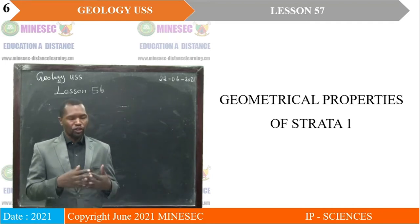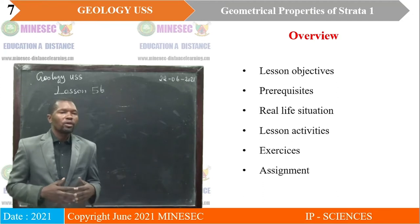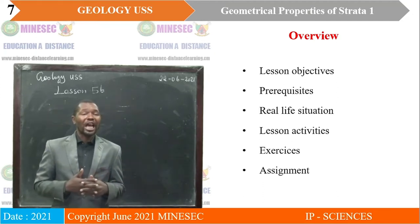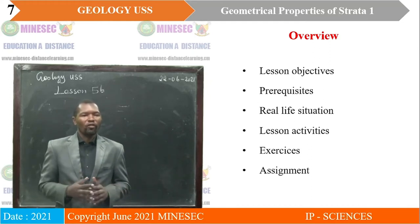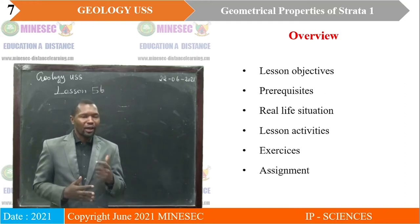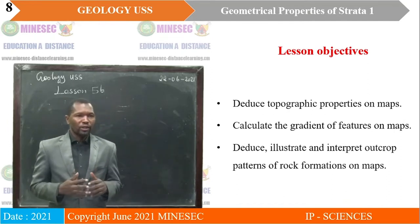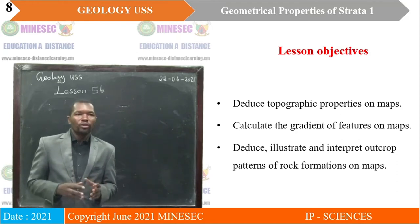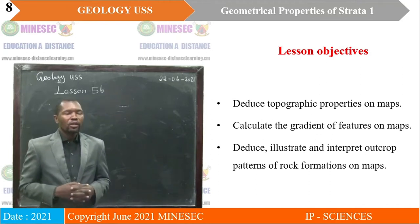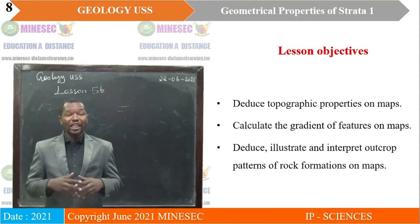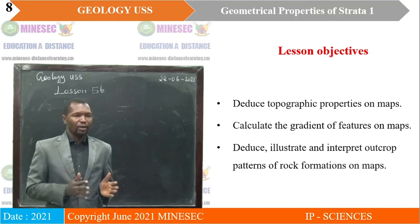We are looking at the topographic properties of strata. For this lesson, we will look at the objectives, the prerequisites, a real-life situation, and carry out lesson activities to guide our appropriation of the lesson. We will also have exercises to test our level of understanding and end with an assignment. Our lesson on geometrical properties of strata 1 will enable us to deduce topographic properties on maps, calculate the gradient of features, and deduce, illustrate, and interpret outcrop patterns of rock formations on maps.